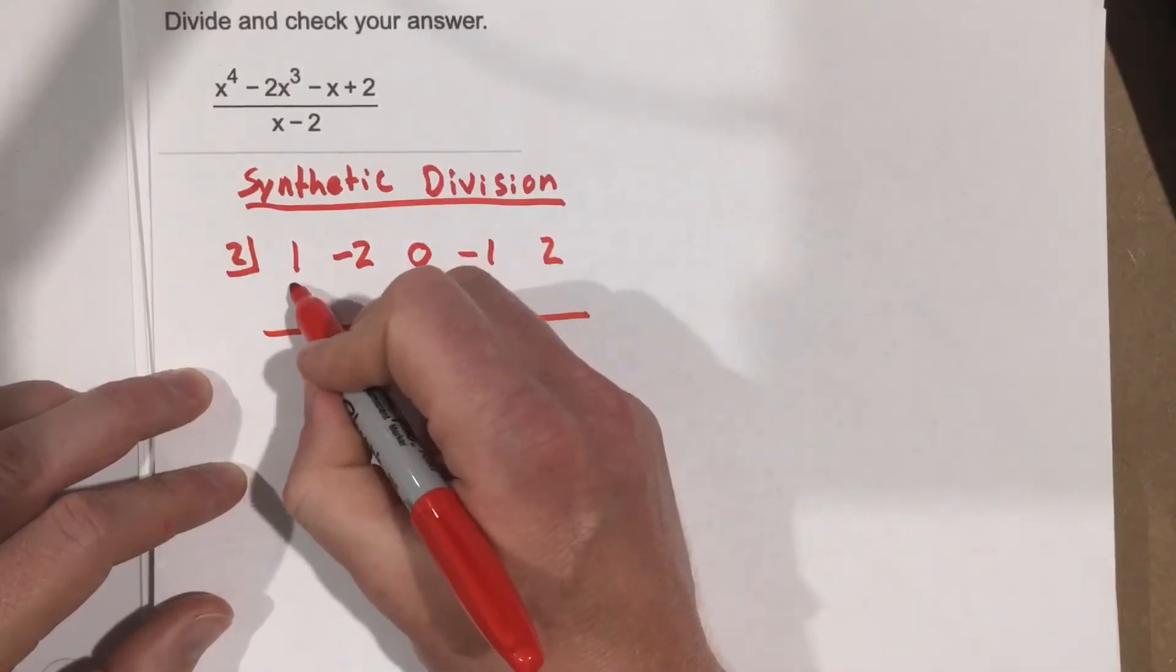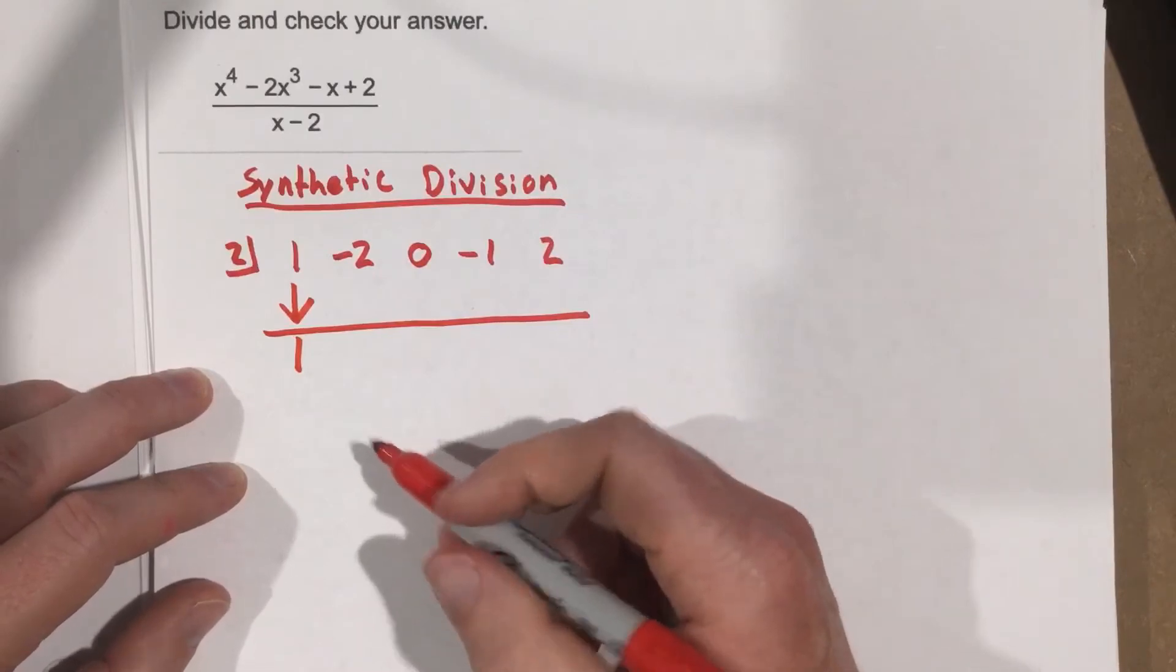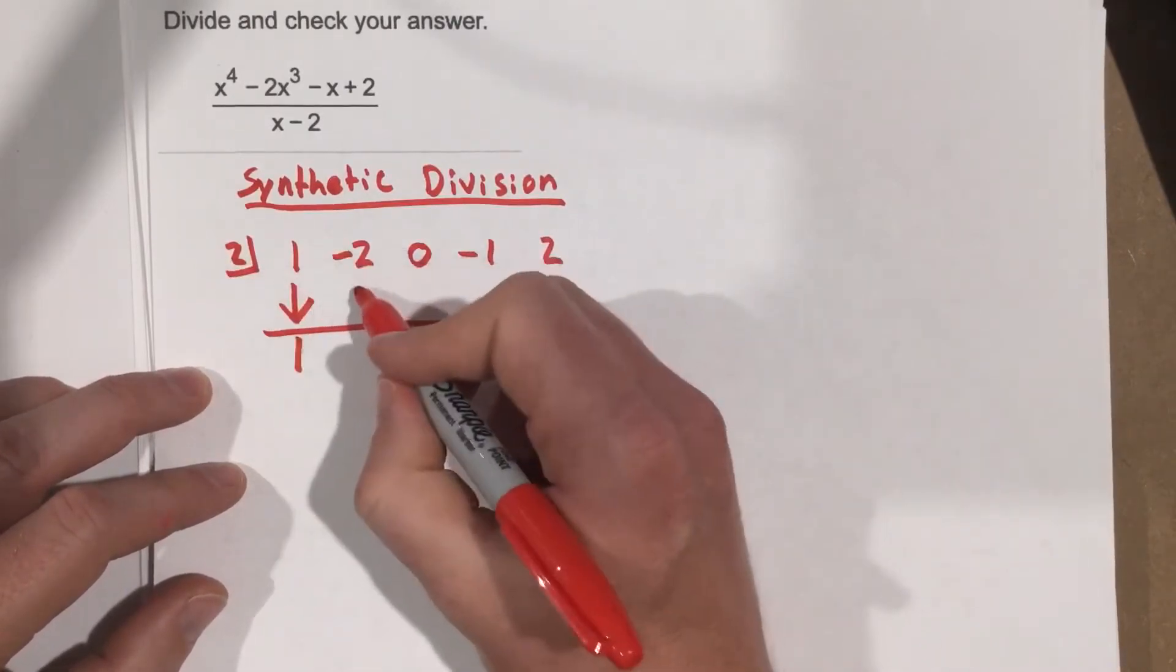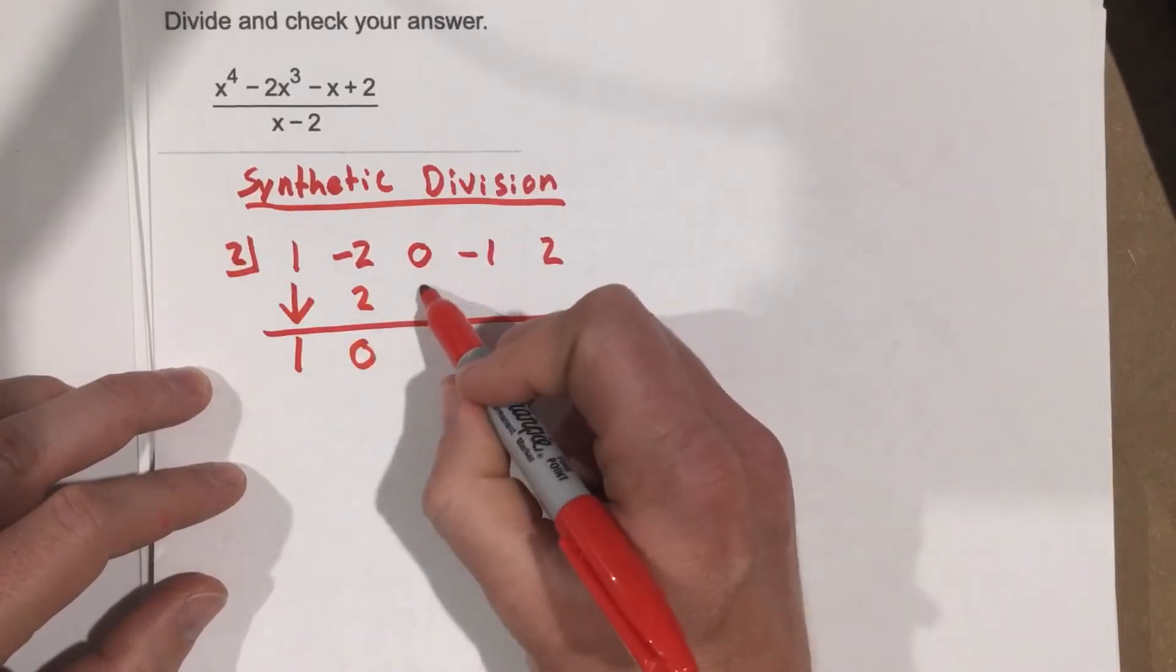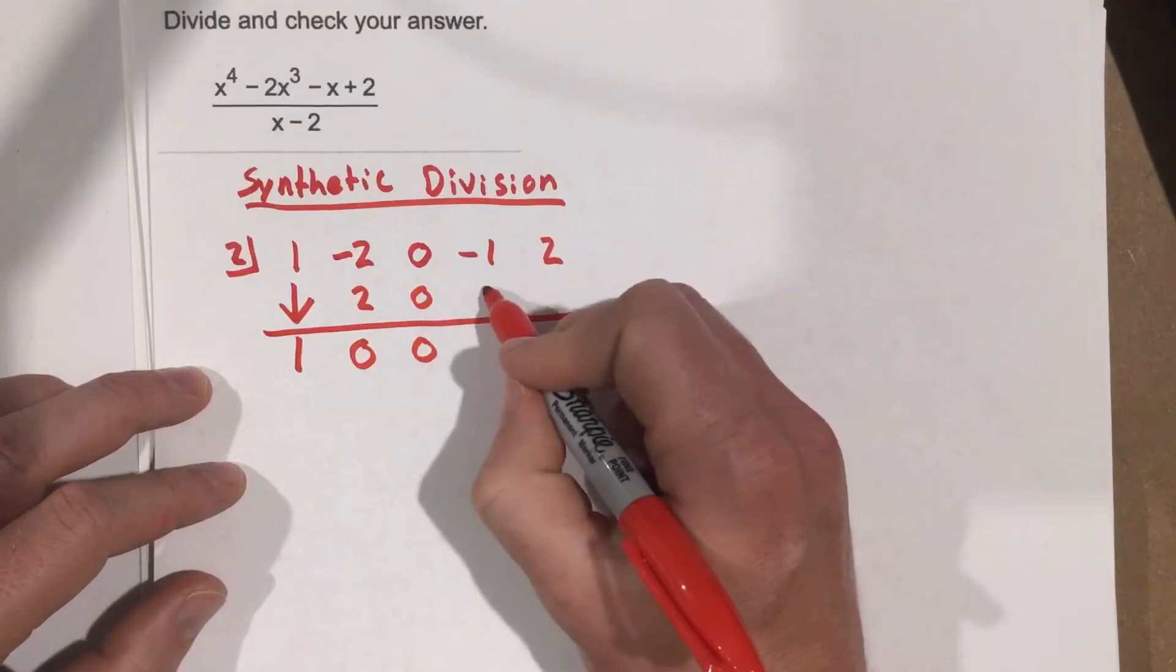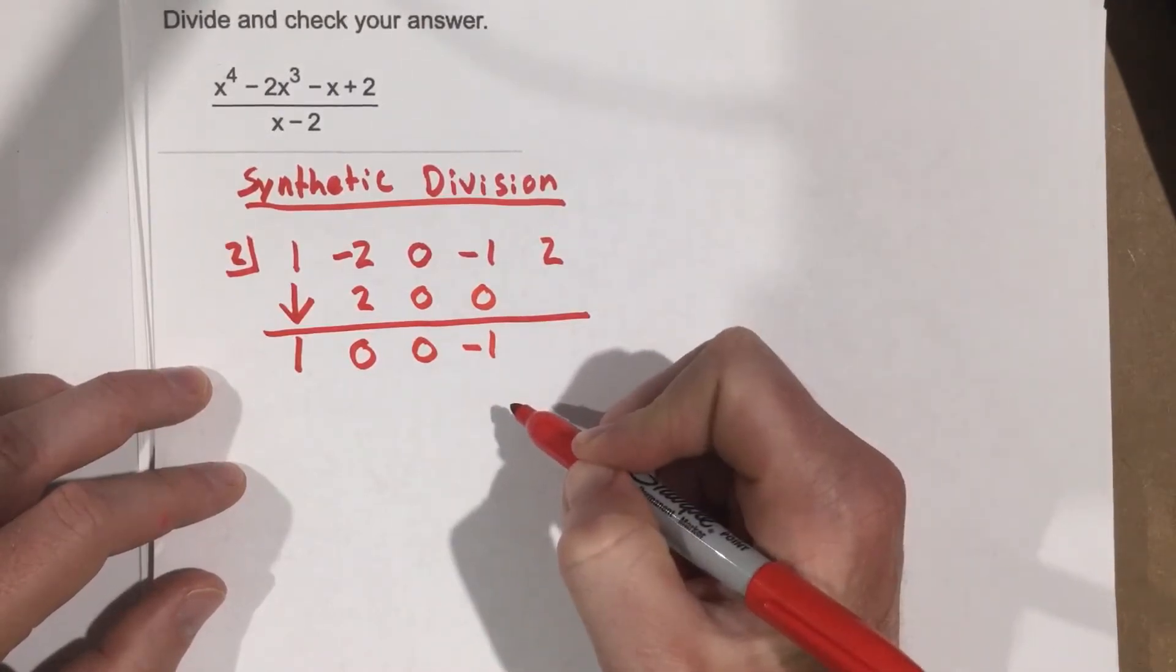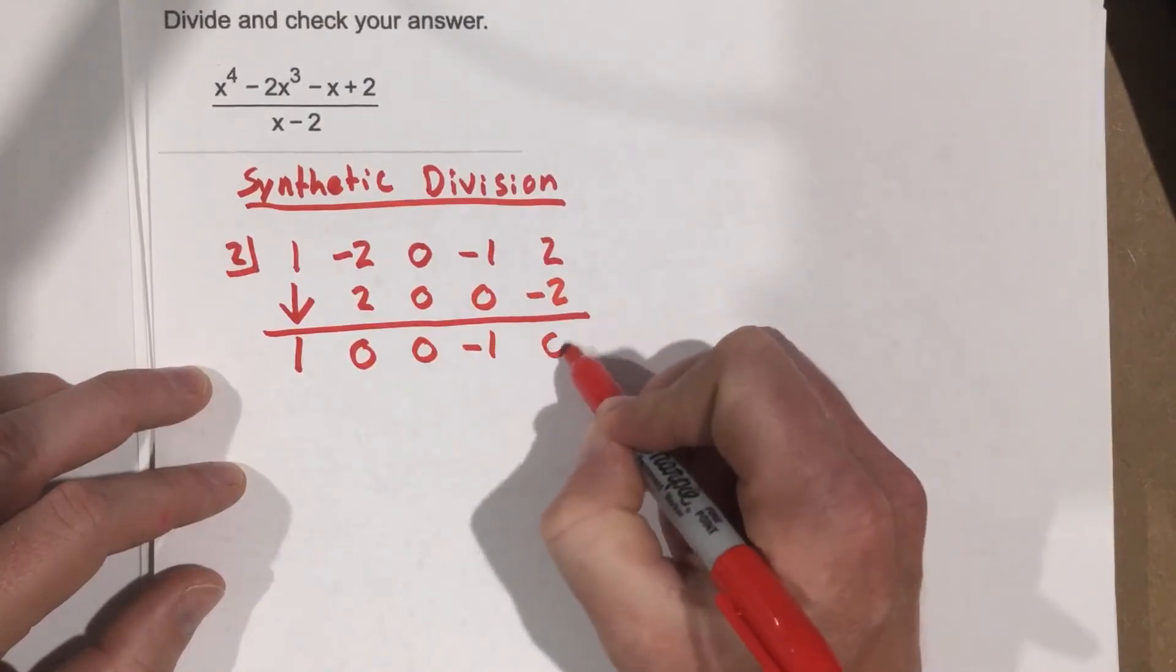Now remember, I'm bringing down the 1 to start. Then it's a series of multiplication and addition: multiply 2 times 1, that's 2, add it, 0, multiply it, 0, add it, 0, multiply it, that's 0, add it, it's negative 1, multiply, you get negative 2, add it, you get 0.